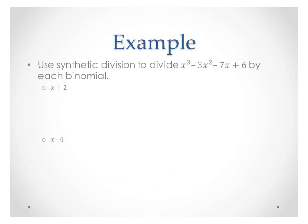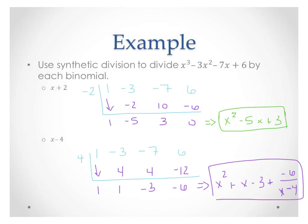Pause the video and see if you can work these out. For the top one, I got no remainder — the answer was just x squared minus 5x plus 3, and k was negative 2. For the bottom one, k was positive 4. I got a remainder of negative 6, giving me x squared plus x minus 3 plus negative 6 over x minus 4. So that is how we use synthetic division to divide — remember, it only works for binomials.